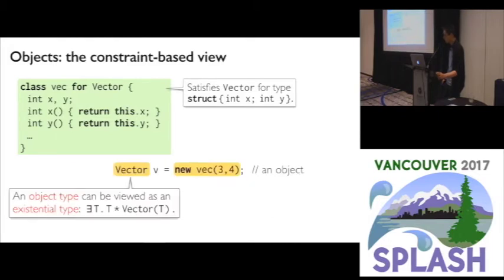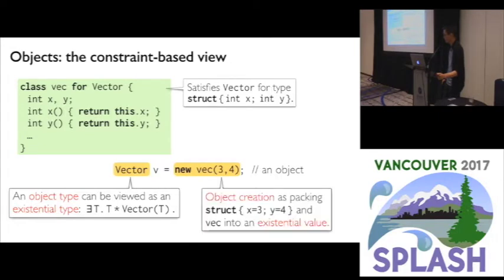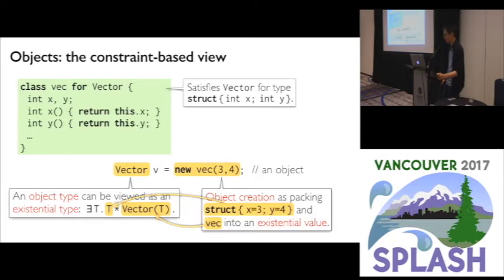An interface, when used as the type of an object, can be viewed as an existential type. The corresponding existential value is composed of a representation of some hidden type T and a class that satisfies the constraint for T. Under the hood, object-oriented programming is really using interfaces as constraints, and when we create objects, we are using classes to satisfy those constraints.